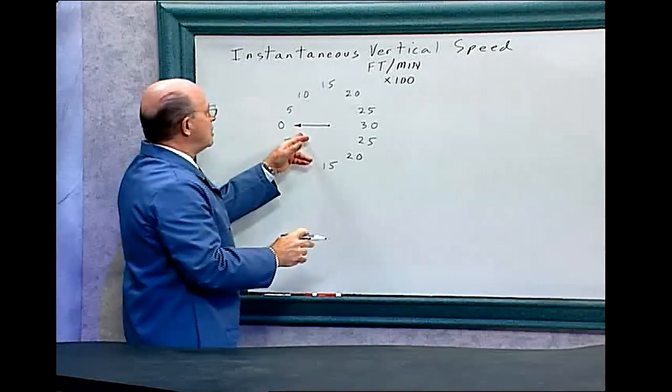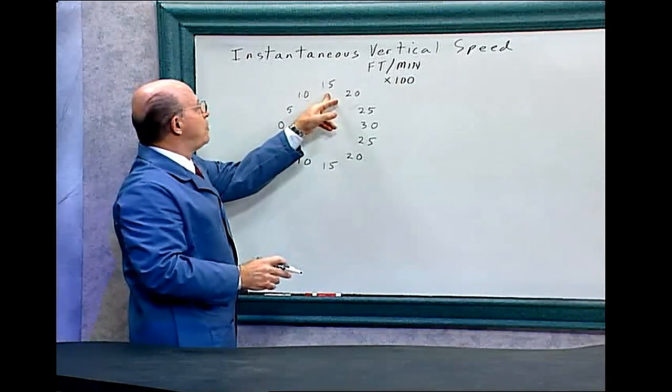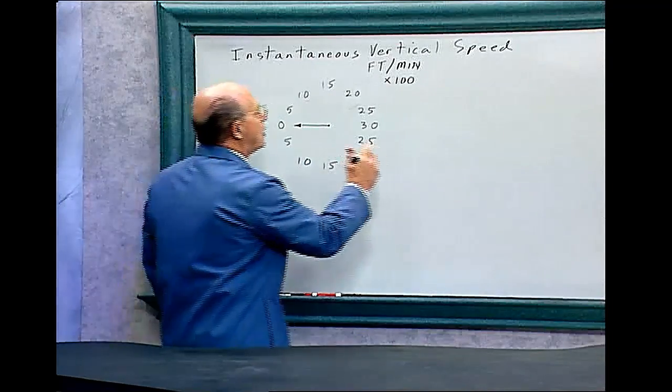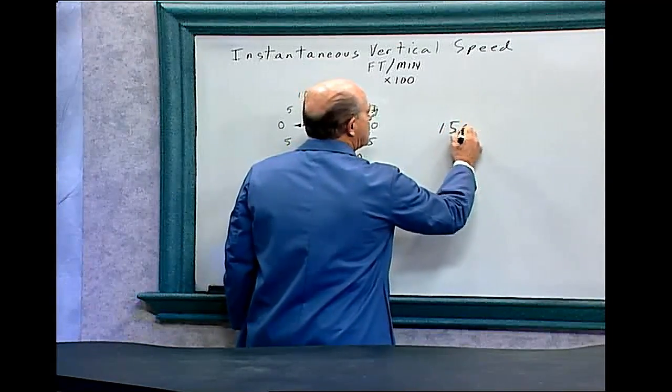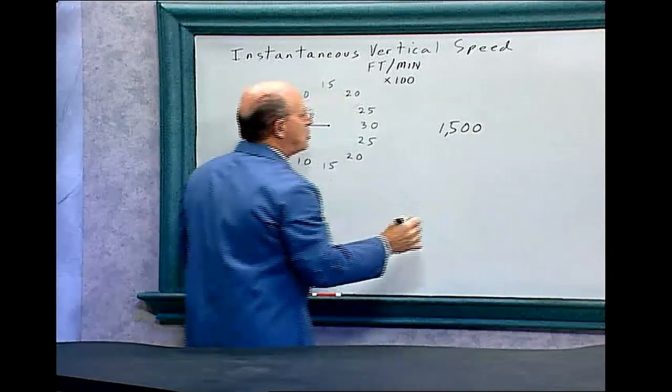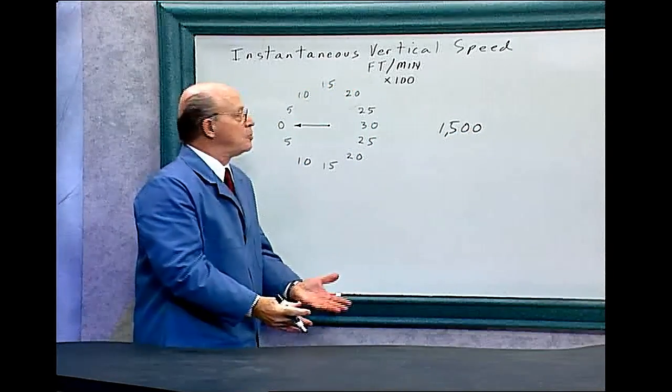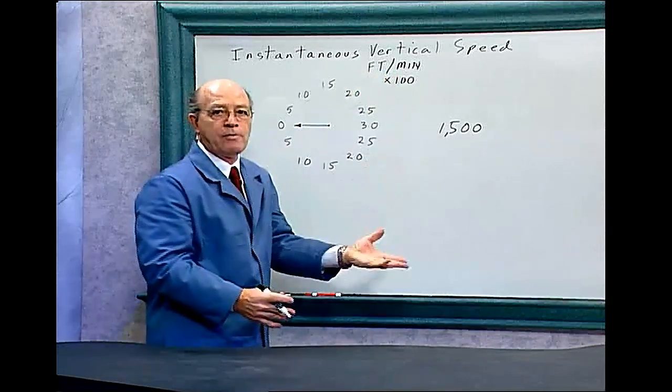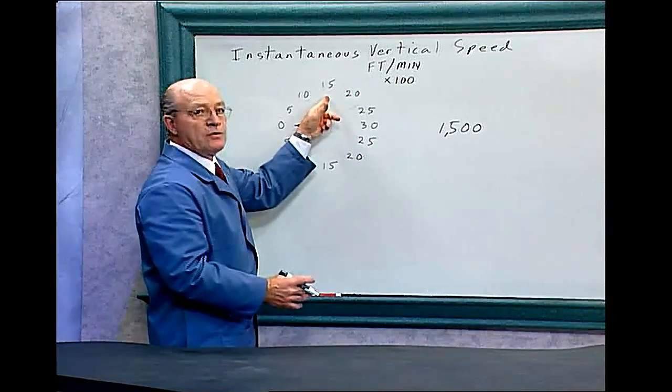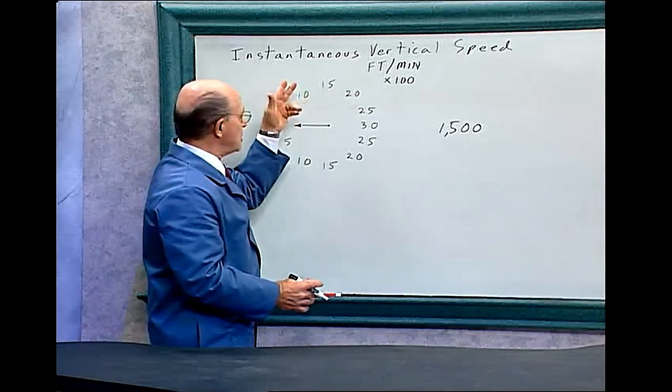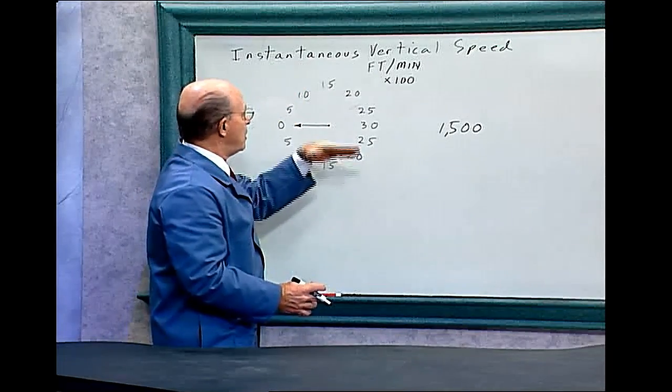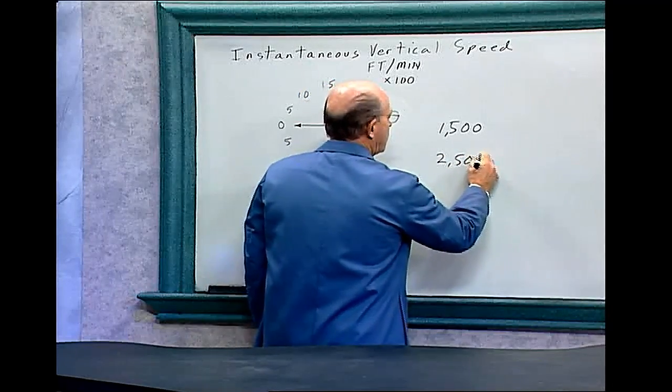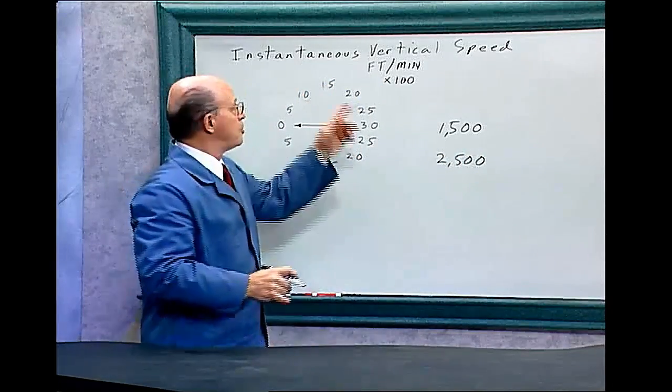Notice that the gauge is that instantaneous vertical speed gauge, and when that needle, say for instance, goes to 15, you're going to have to, in your head, multiply that by 100. So 15, and all you have to do is add two zeros to it. Then the helicopter would be ascending 1,500 feet every minute if its needle stays on 15. If the needle swings down to 25, it's going down, and then it would go 2,500 feet per minute.